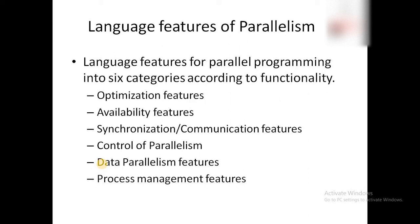The six features are: first, optimization feature; second, availability feature; third, synchronization or communication feature; fourth, control of parallelism; fifth, data parallelism features; and sixth, process management features. These are all the features a parallel programming language supports to incorporate parallelism in developed code.